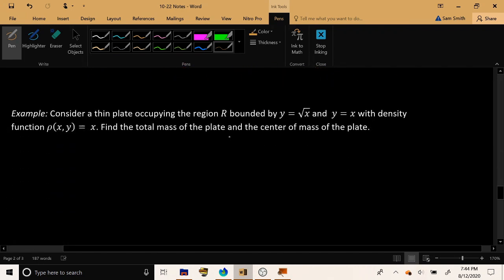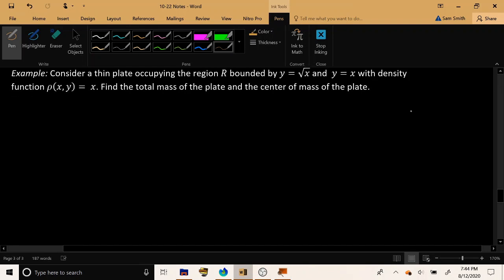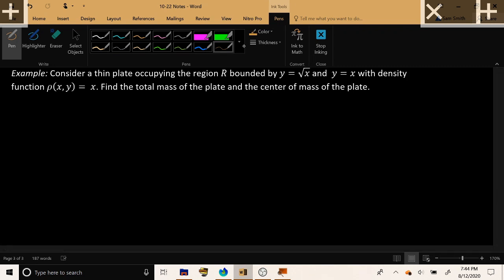So let's try a concrete example. Let's consider a thin plate occupying the region R, which is bounded by the curves y = √x and y = x, with a density function of ρ(x,y) = x. Let's find the total mass of the plate and, subsequently, the center of mass of the plate.